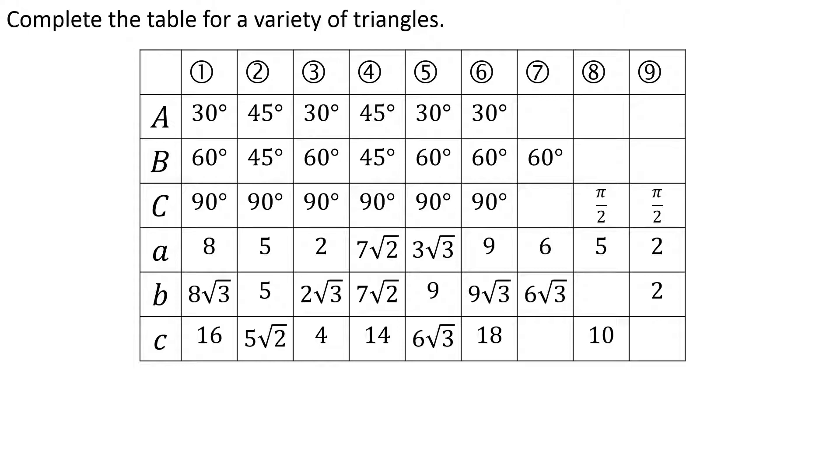Number 7, again I can deduce it's a 30-60-90 because one of the sides is √3 times the other one. So sure enough it's a 30-60-90: 6, 6√3, and 12.